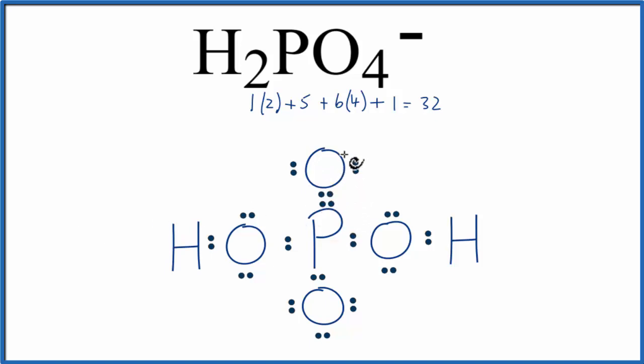That would mean that the formal charge on this oxygen would be 0, on the phosphorus would be 0, and the formal charge on this oxygen would be minus 1. And that's okay, because we need to have a minus 1 to match this. So this is actually a better Lewis structure for H2PO4 minus than our original one with all single bonds. Formal charges are a useful way to determine if you have the best Lewis structure.